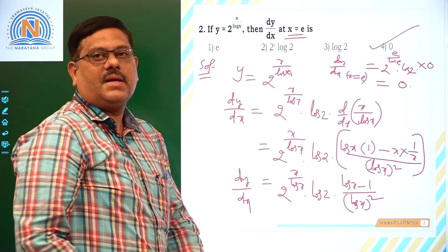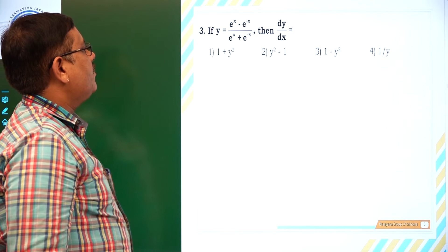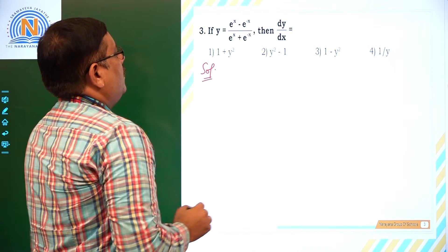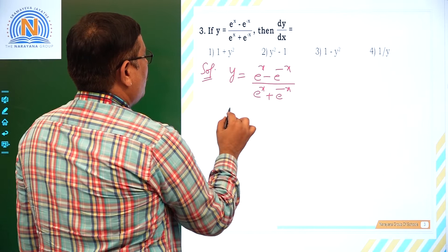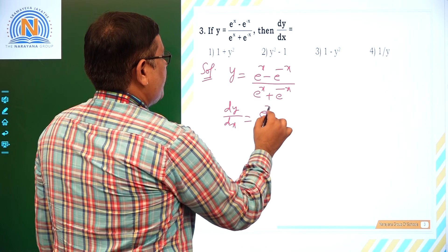Let us see the next question. If y equals (eˣ − e⁻ˣ) / (eˣ + e⁻ˣ), then what is the value of dy/dx? So y is given as (eˣ − e⁻ˣ) / (eˣ + e⁻ˣ). For dy/dx we apply the quotient rule: v = eˣ + e⁻ˣ, and we differentiate the numerator, which gives eˣ + e⁻ˣ.